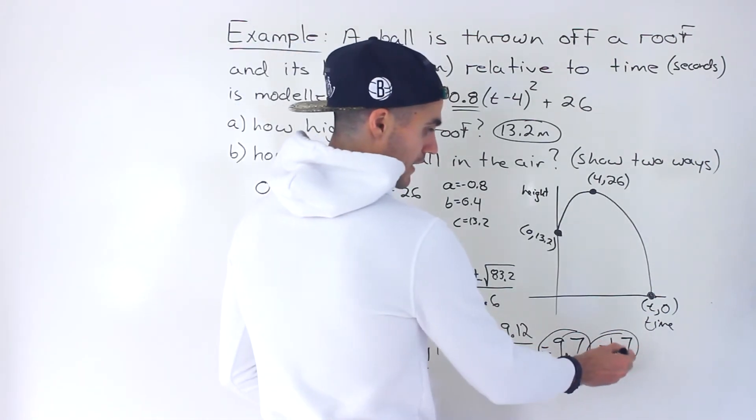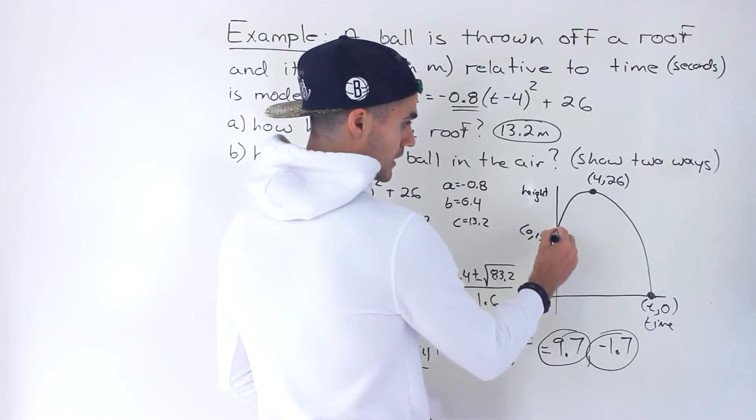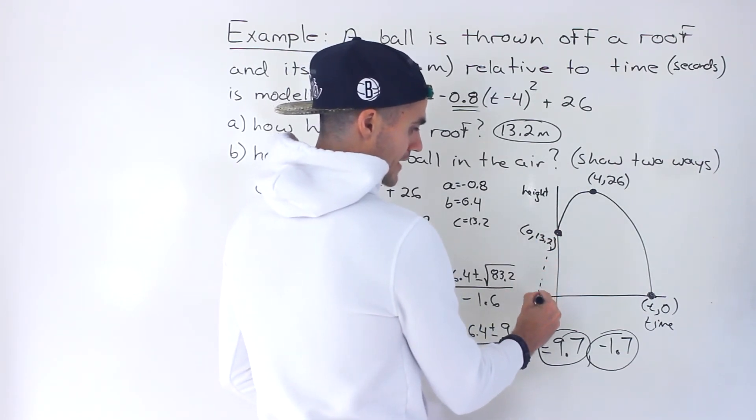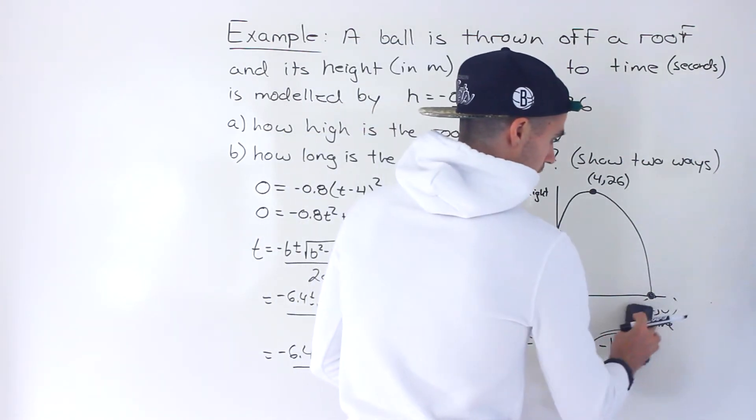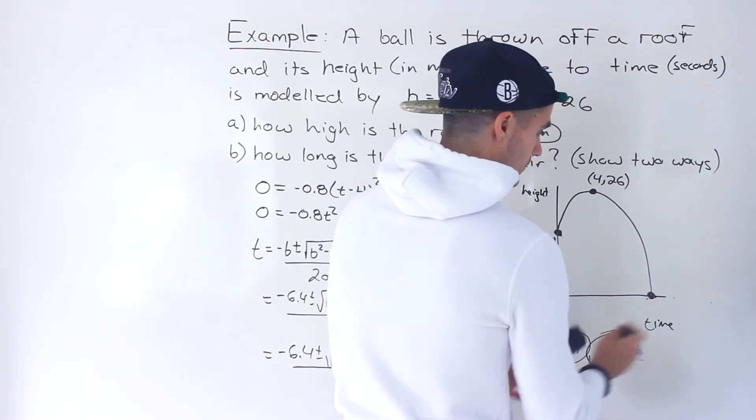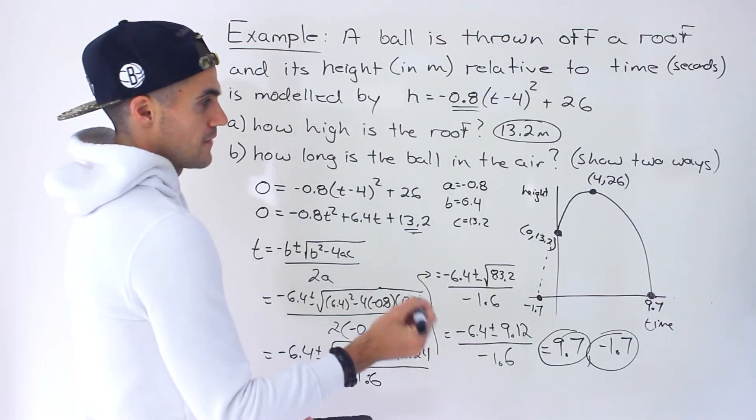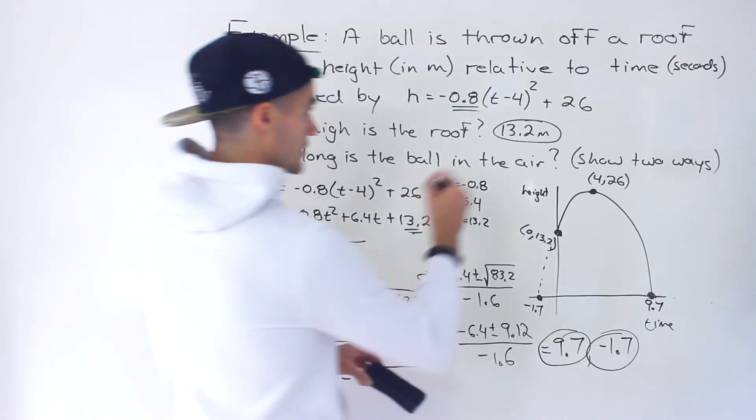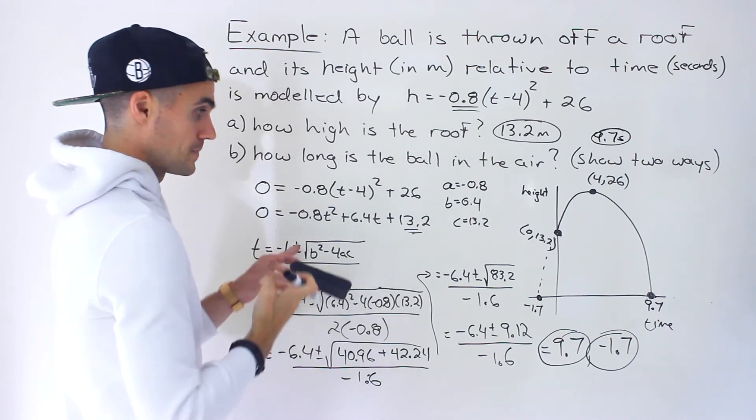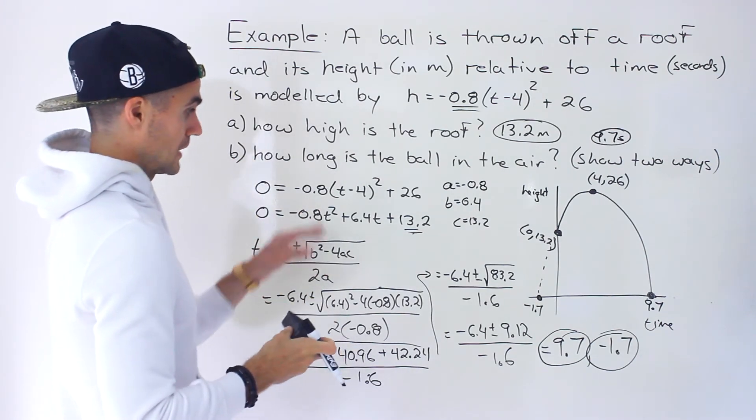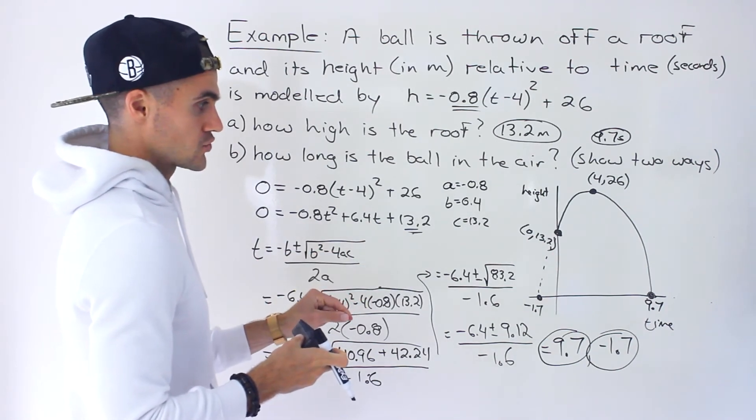Notice that this negative value we're going to ignore because time can't be negative. But if you were to extend this quadratic, that's where that negative 1.7 would be. And then the positive 9.7, that's over here. So that ends up being the answer to part b. How long is the ball in the air? 9.7 seconds. And we did it one way here with the quadratic formula. We had to expand this and then plug in those parameters from the standard form into the quadratic formula.